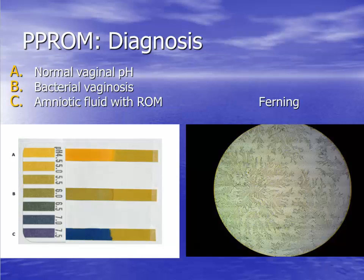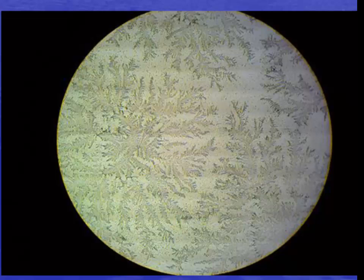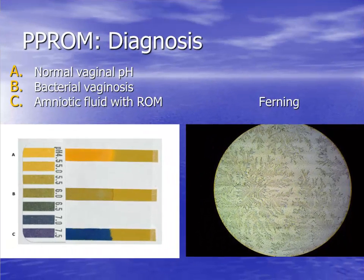Initial diagnostic studies performed during evaluation for PPROM include pH and ferning of fluid collected from the vagina. Vaginal discharge normally has a pH of 3.5 to 4.5. In contrast, amniotic fluid is alkaline with a pH of about 7. Alkaline fluid will change pH paper to a deep blue. If vaginal fluid causes this change, it is suggestive of PPROM. However, blood, semen, and bacterial vaginosis are also alkaline and will change the color of pH paper. The next test performed on the vaginal fluid is ferning. The high salt content and estrogen present in amniotic fluid will lead to crystallization and an arborization pattern seen on microscopy when a sample of amniotic fluid is allowed to dry. This arborization pattern is called ferning and is demonstrated in the photograph on the right. If this pattern is seen on microscopy of fluid from the patient's vagina, it is very supportive of PPROM.